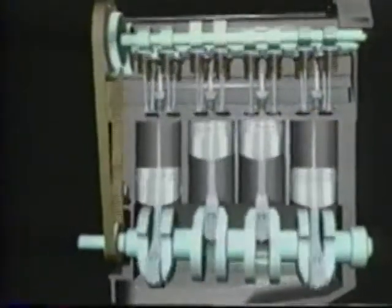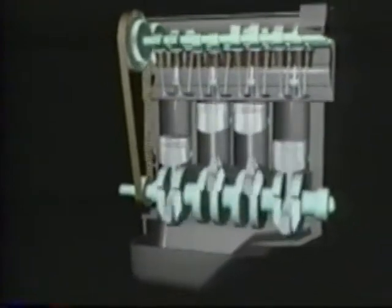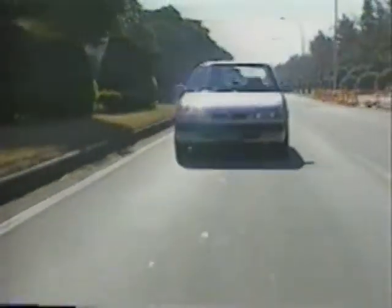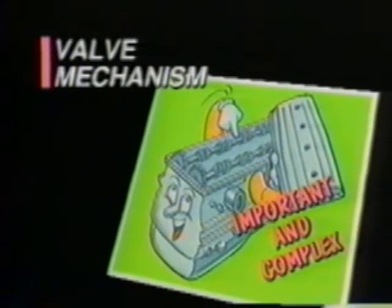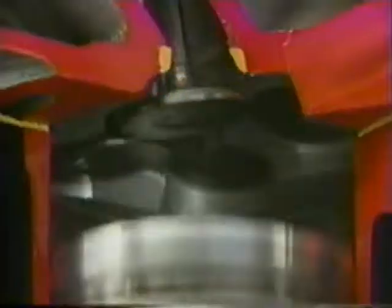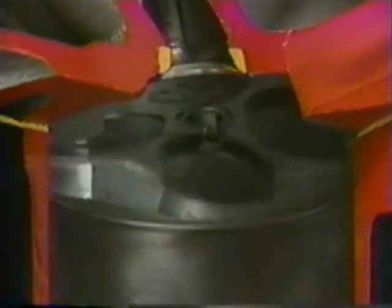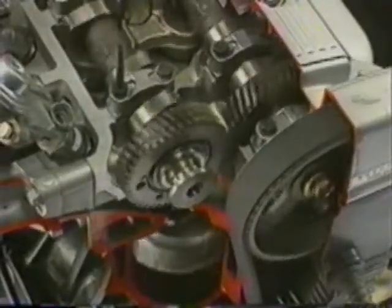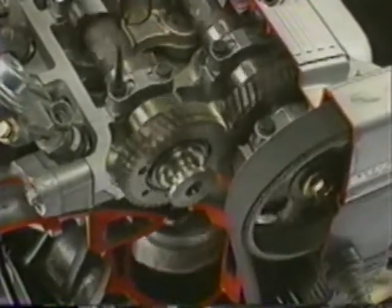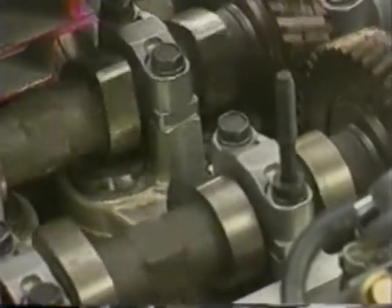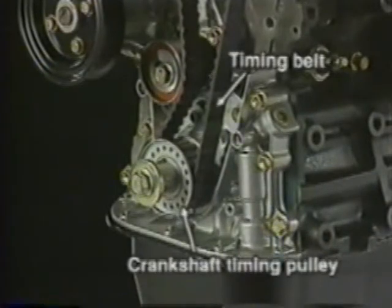We have studied the major parts of the engine. An engine can produce high power only when all these parts function normally. Among the many engine parts, the valve mechanism is especially important and complex. Let's take a close look at the valve mechanism. The valve mechanism is designed to operate the intake and exhaust valves, which control the intake of the air-fuel mixture into the cylinder and exhaust the combustion gas out of the cylinder at the proper timing.